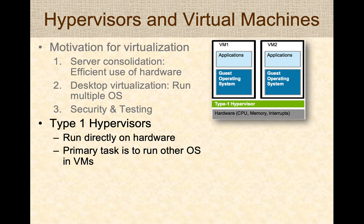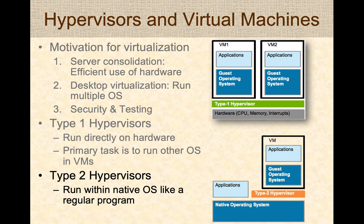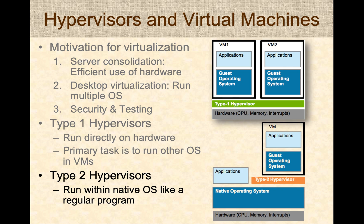There are two types of hypervisors. Type 1 hypervisors run directly on hardware, versus Type 2 hypervisors, which are like normal programs that run on top of a host operating system and run different operating systems inside virtual machines created by Type 2 hypervisors.